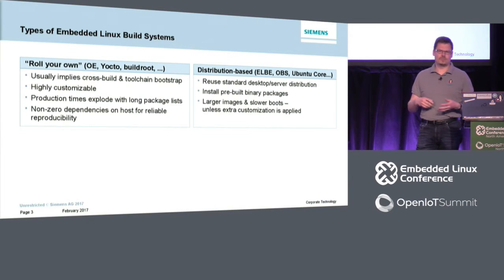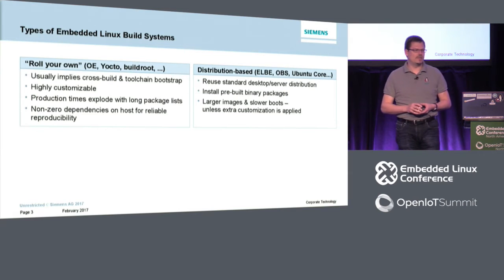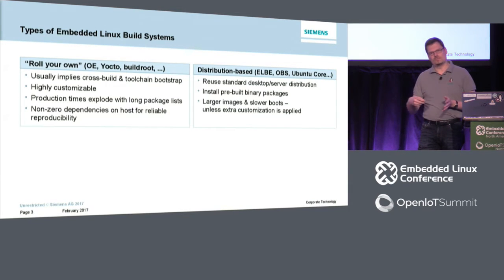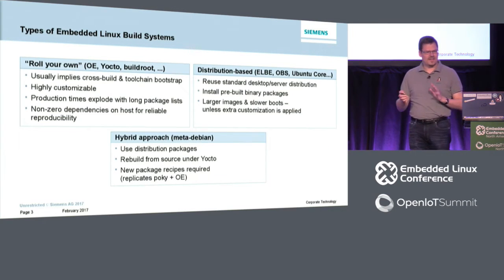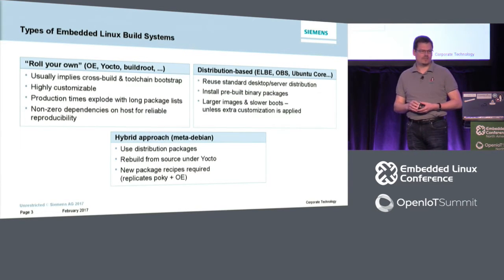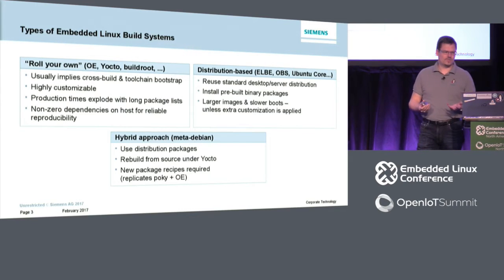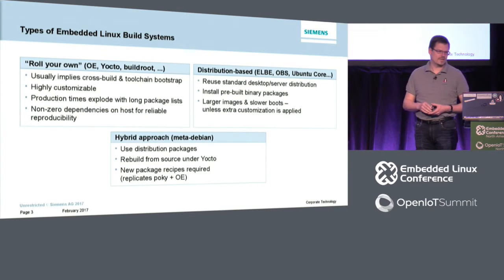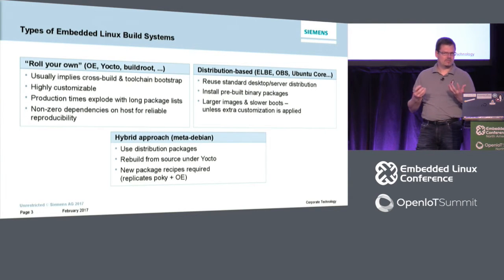The idea is to install from pre-built binaries rather than build everything from source. That may lead to larger images and slower boot time unless you apply certain customizations — some kind of post-processing on the normal distribution installation. Between both approaches, there's a hybrid solution, represented by MetaDebian. It uses distribution packages in source form but rebuilds them using a classic from-source distribution building system like Yocto. They try to combine benefits from both, but also have downsides — for example, you have to write your own recipes to import those sources.